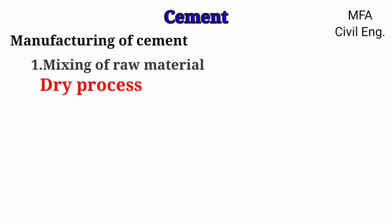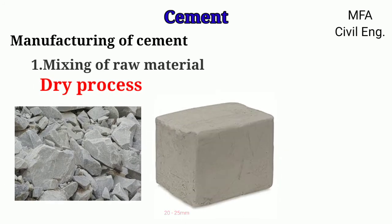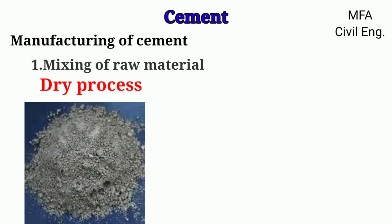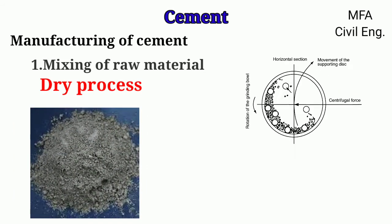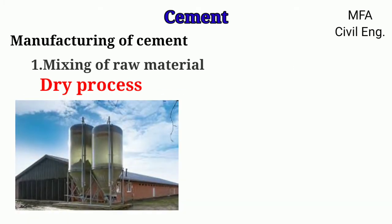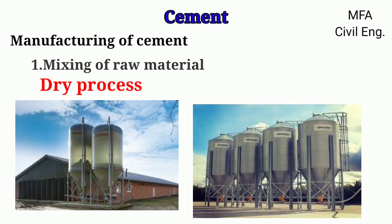In the dry process, the size of limestone and clay are reduced to about 20 to 25 mm in a crusher. Then dry air is passed on the crushed material. This crushed material is then pulverized into a fine powder in a ball mill and a tube mill, and then stored in a hopper. Each raw material, pulverized separately, is then mixed in correct proportion and stored in a storage tank.